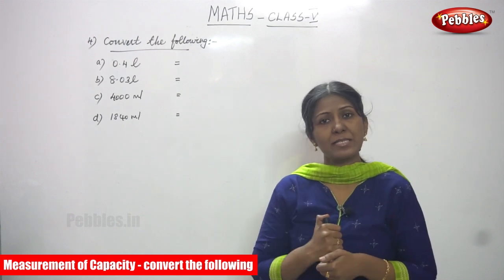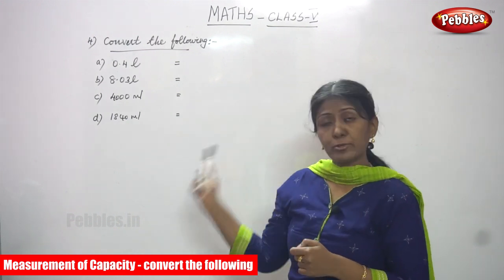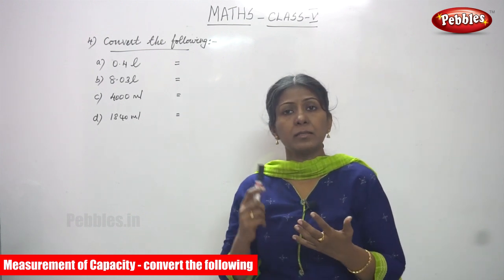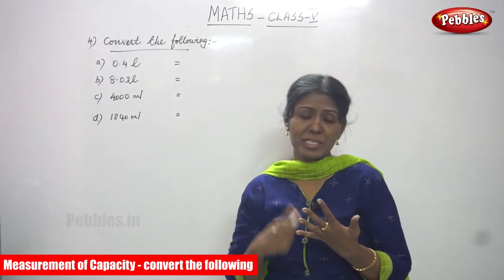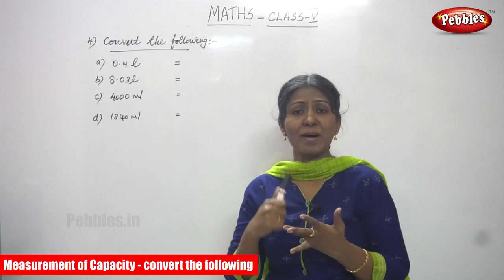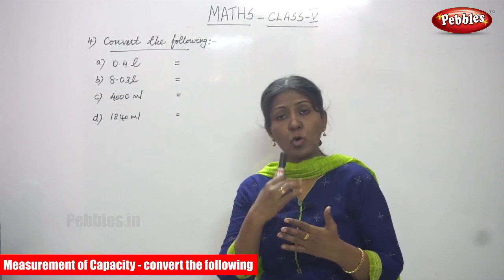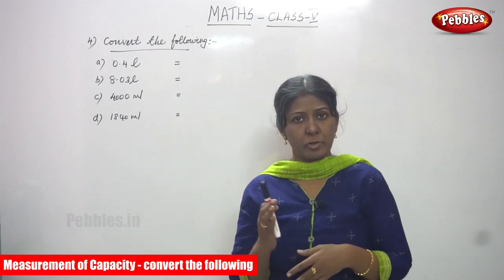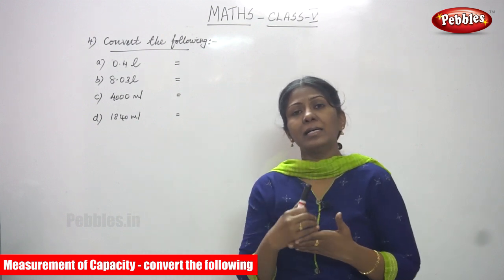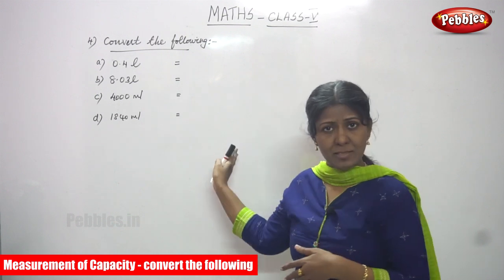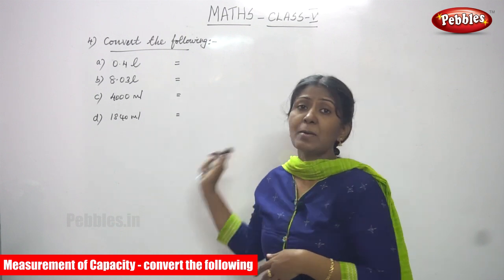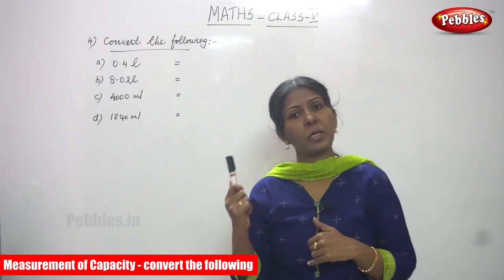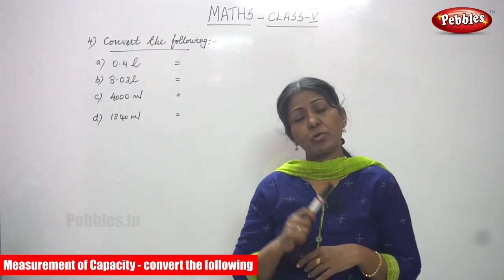Hi, welcome to Pebbles. In today's class we are going to see 'Convert the Following.' In the last class we have seen measurement of length, measurement of mass, and measurement of capacity. This is the last unit — measurement of capacity. The formulas for this unit are: one liter is equal to 1000 ml, and 1000 ml is equal to one liter.